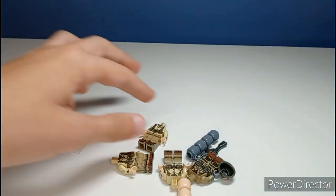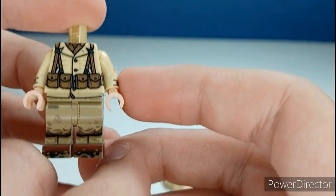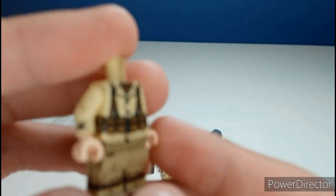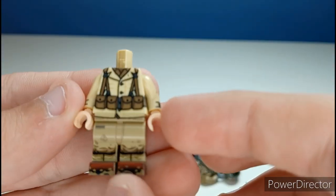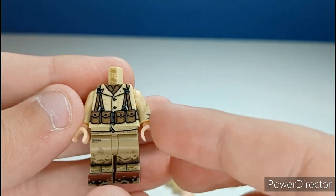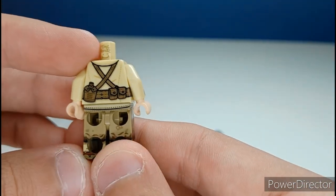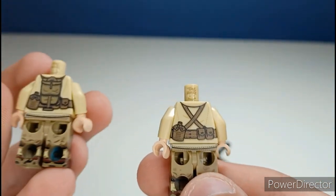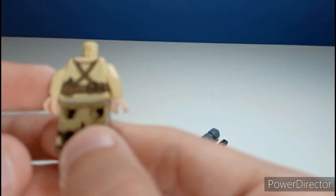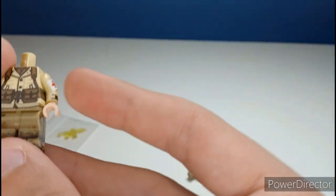This is the new one with full arm printing and everything. Next up, the BAR, really nice figure, got all that printing. Next up Thompson, looks pretty nice, the back looks really nice. It's the exact same as the M1 Garand.